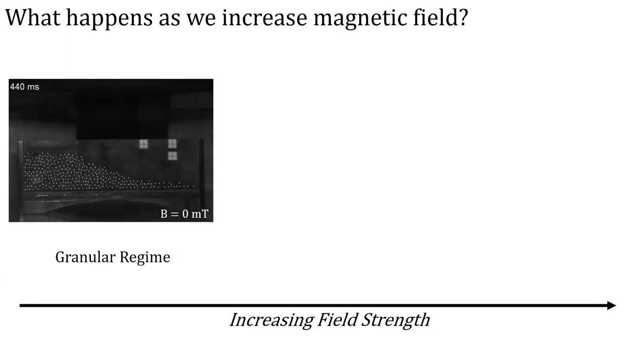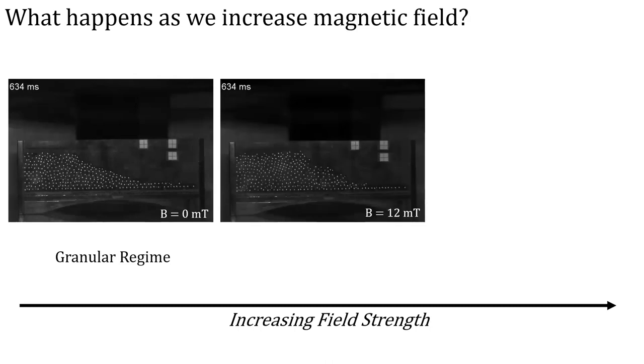And then as we ramp up the magnetic field, you'll start to notice the effects around here at 12 millitesla. Recall that the magnetic field is pointing upwards in these images. And so each particle in the stack is attracted to the particle above and below it, due to the way they've magnetized. And so you see this structure kind of persists even over the avalanche, and particles start to move more in clumps. So we call this the correlated regime, because the motion is correlated.